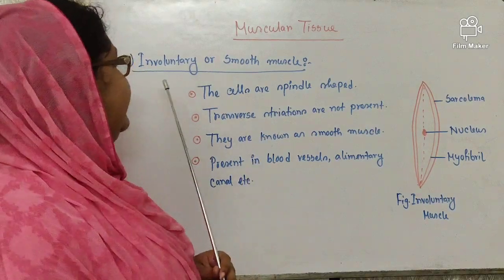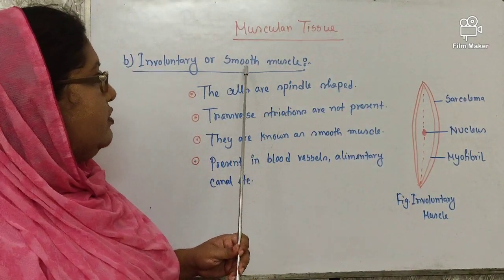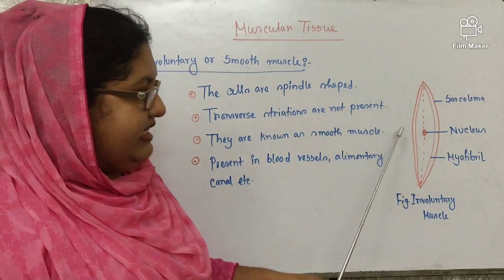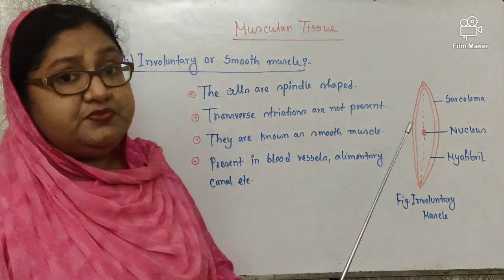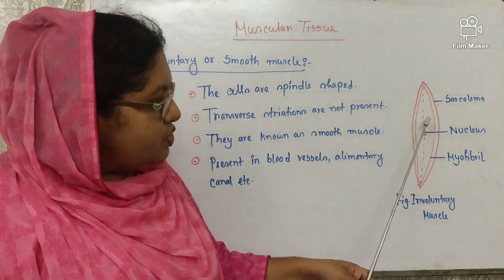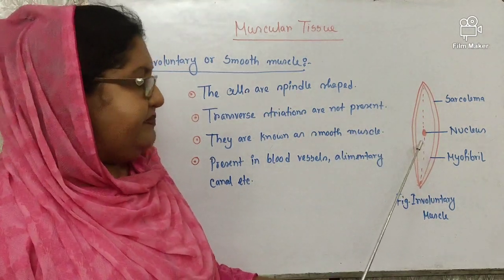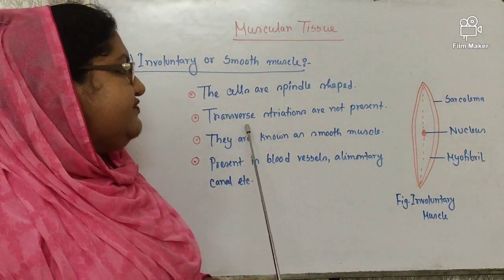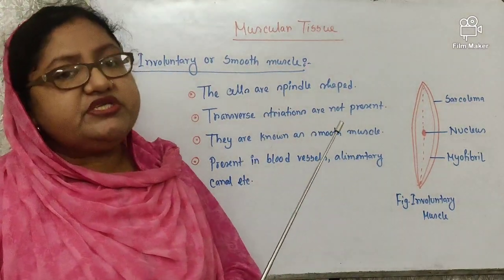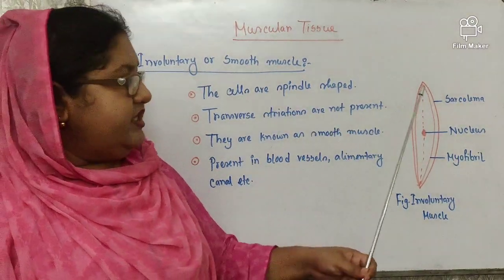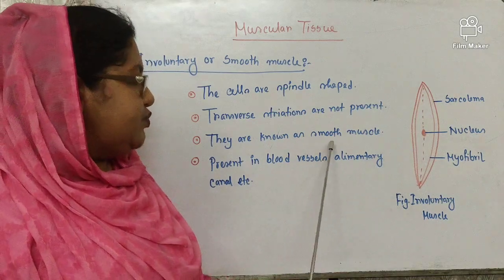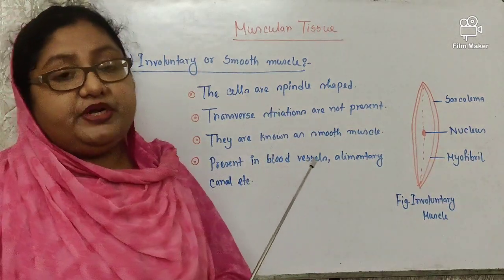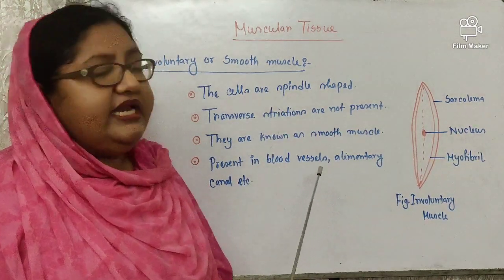The second type of muscular tissue is involuntary muscle, or smooth muscle. From the diagram, the cells are spindle-shaped and there are no transverse striations — that is why they are known as smooth muscle. These muscles are present in blood vessels and the alimentary canal.